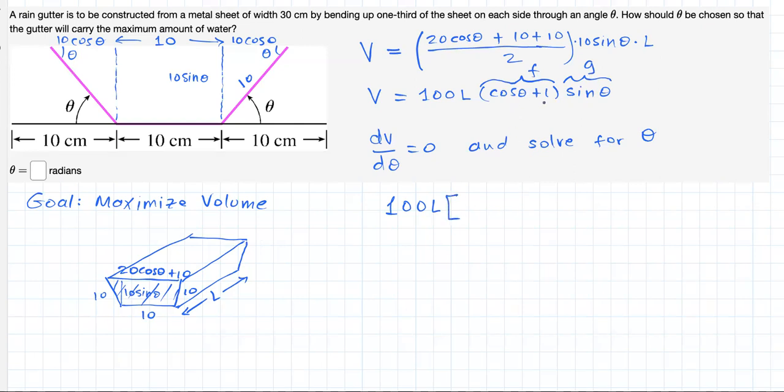Based on the product rule, derivative of F is just minus sine of theta, times the other function, sine of theta, plus derivative of the second function G.